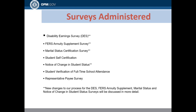The following is a list of the different surveys that the Survey and Student Branch administers: the disability earnings survey, the FERS annuity supplement survey, the marital status certification survey, student self-certification, notice of change in student status, student verification of full-time school attendance, and the representative payee survey. New changes to the disability earnings survey, the FERS annuity supplement, marital status, and notice of change in student status surveys will be discussed in more detail.